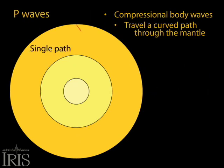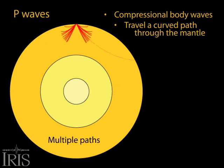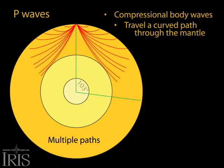P waves travel a simple curved path through Earth's mantle, refracting along layers at depth and return to the surface at about the angle that they left the epicenter. P waves arrive at seismograph stations up to 103 degrees from the epicenter.